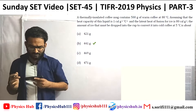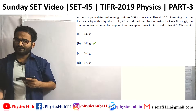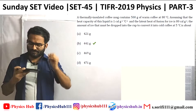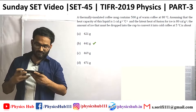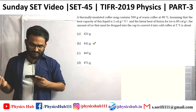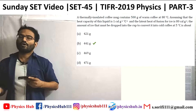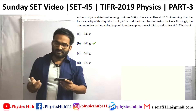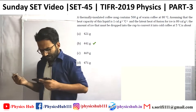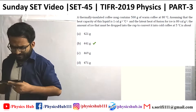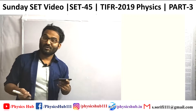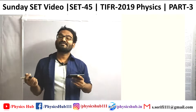A thermally insulated coffee mug contains 500 grams of warm coffee at 80 degrees centigrade. Assuming that the heat capacity of this liquid is 1 calorie per gram per degree centigrade, and the latent heat of fusion for ice is 80 calories per gram, the amount of ice that must be dropped into the cup to convert it into cold coffee at 5 degrees centigrade is about?